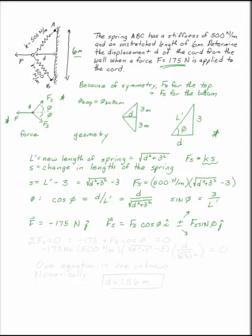To write your equations of equilibrium, we want to take the sum of the forces in the X direction equals zero, and the sum of the forces in the Y direction equals zero. To sum the forces in the X direction, we have minus 175 newtons from F, and Fs cosine phi from the spring force. This is equal to zero.